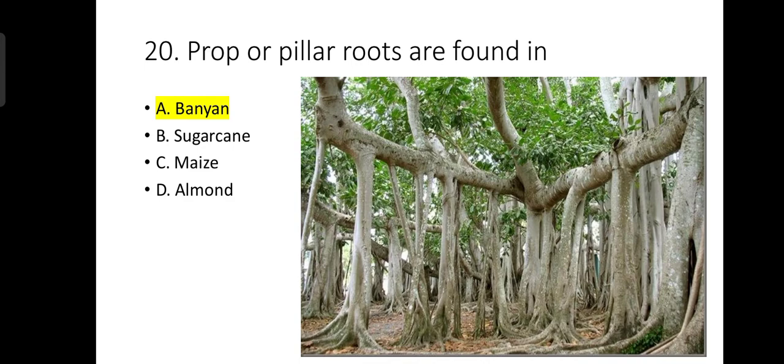Number 20: Prop or pillar roots are found in banyan or Ficus. Pillar roots look like a pillar which supports the plant.